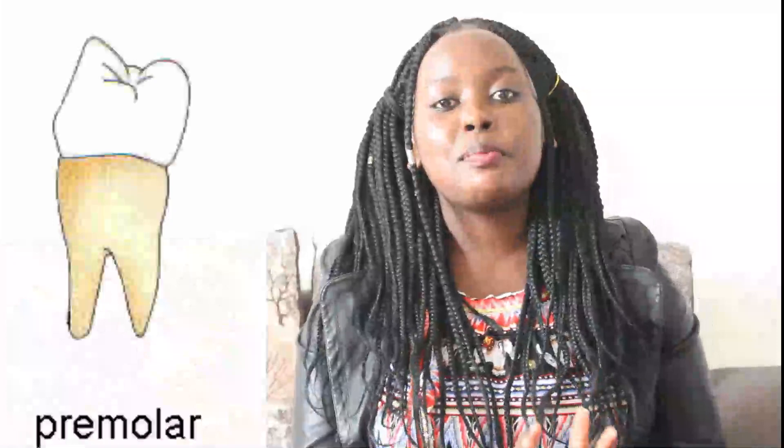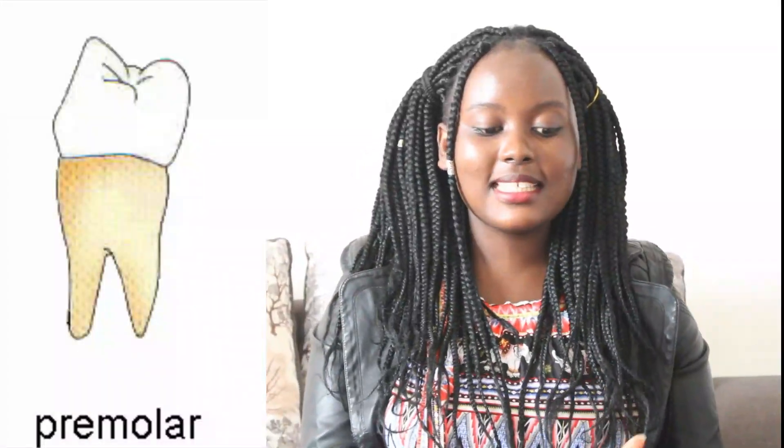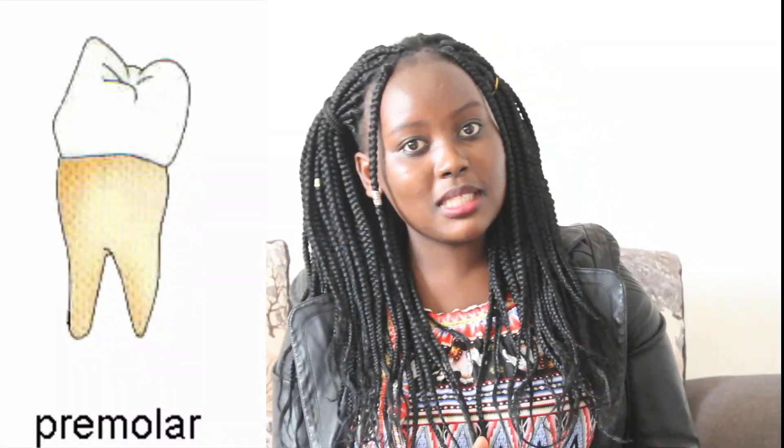The third type is the premolars, also known as the bicuspids. They are located behind and adjacent to the canines. Premolars have two roots and are used for crushing food, as they are rigid in nature. They have three to four cusps and are eight in number — four in the upper jaw and four in the lower jaw.